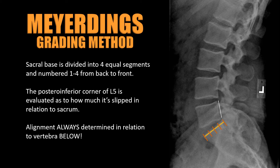Meyerding's grading method is very useful. You divide the sacral base into four equal parts and then look at the posterior aspect of the L5 vertebral body to see how far it has translated anterior in relation to the sacrum. If it has fallen zero to 25 percent into the first quadrant, that is a grade one. Then grades two, three, four, and five respectively if it has moved all the way anterior to the sacral base.